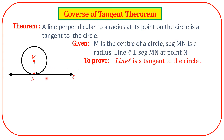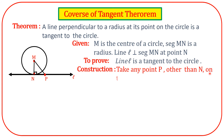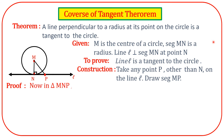Now, do some construction: take point P other than N on line L and draw segment MP. In triangle MNP, angle MNP is a right angle because MN is perpendicular to line L.